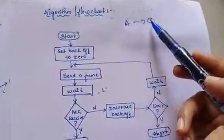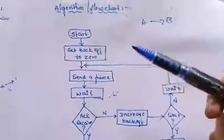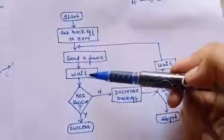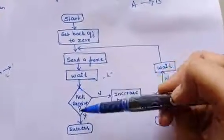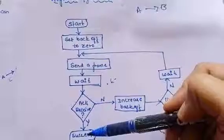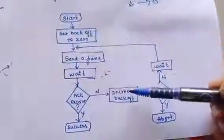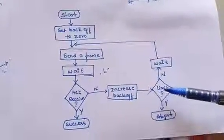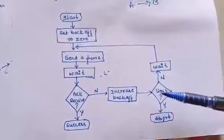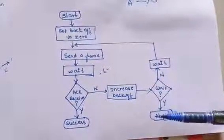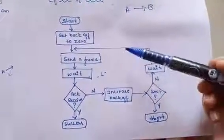Suppose station A wants to send a frame to B. It starts by initializing backoff to zero, then sends the frame and waits for acknowledgment at a specified time. If acknowledgment is received, the communication is successful. If not, it increases the backoff and checks if the backoff limit has been exceeded. If exceeded, it aborts the communication. If not, it waits for a random amount of time and sends the frame again.